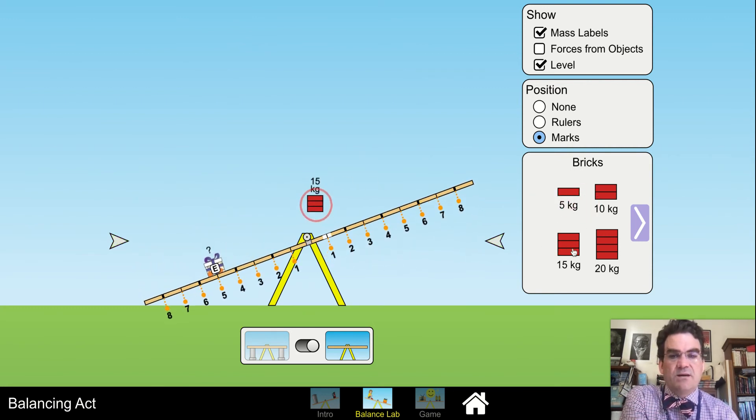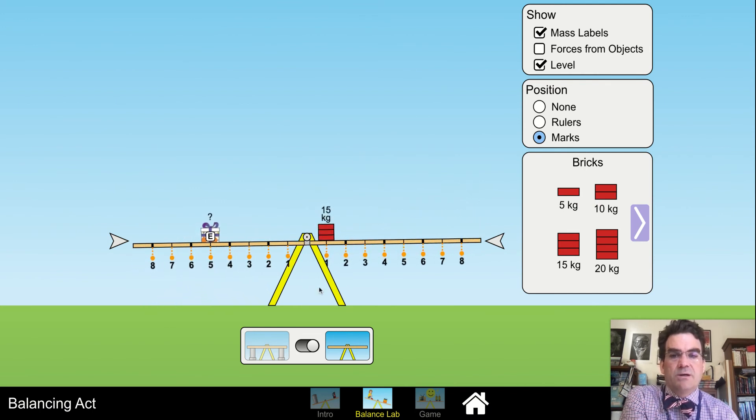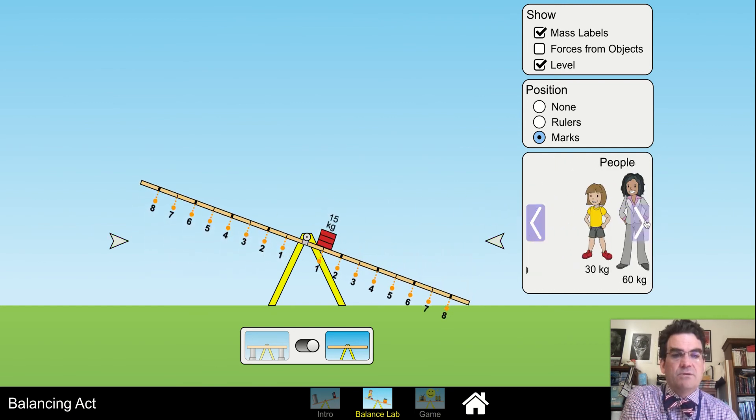We could have also used the 15 here. That helps people understand that a little bit easier. So 1 times 15 is 15, torque of 15 on the right, torque of 15 on the left. Time to move to F. E was a little tricky there.